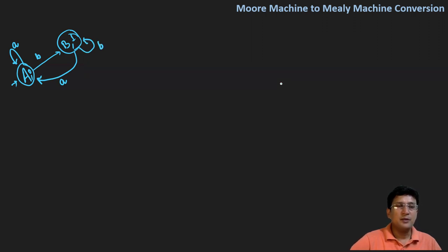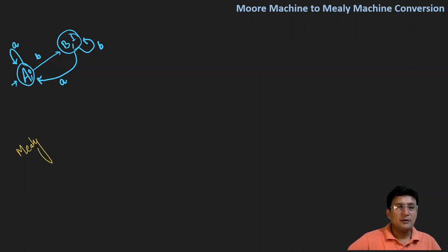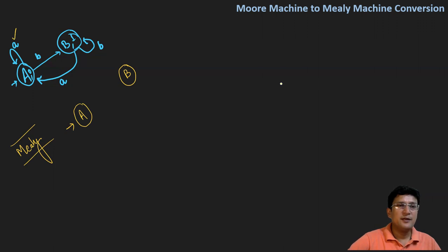This is the Moore machine given, and we have to convert it to the Mealy machine. In the Mealy machine, the output will be associated with the transitions, so we will mark the transitions with each state. You can see that this 'a' transition is landing at state A; hence the output of this transition will be the output associated with that state — so A/0, meaning 'a' is the input and zero is the output.